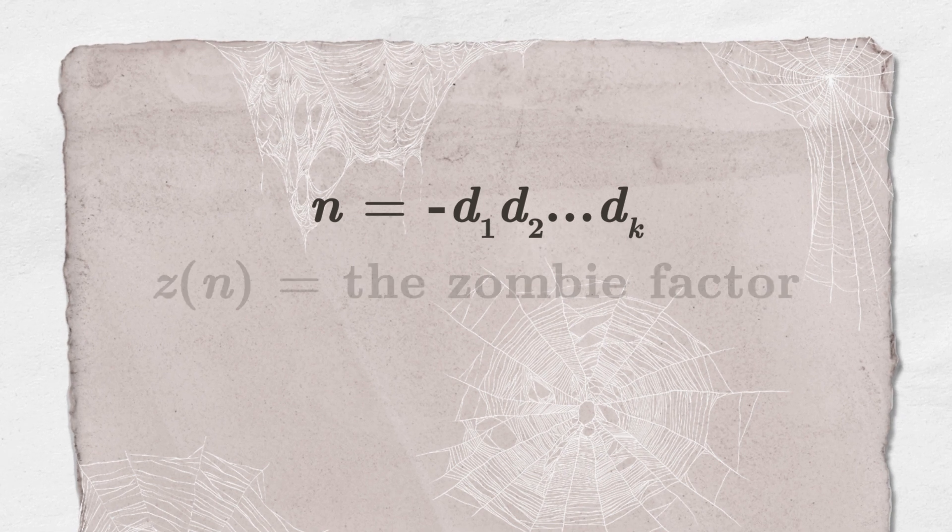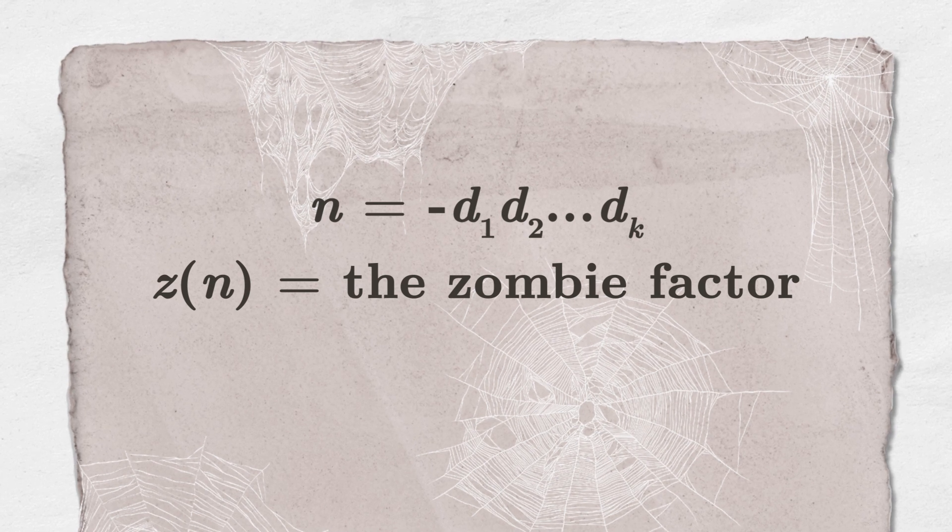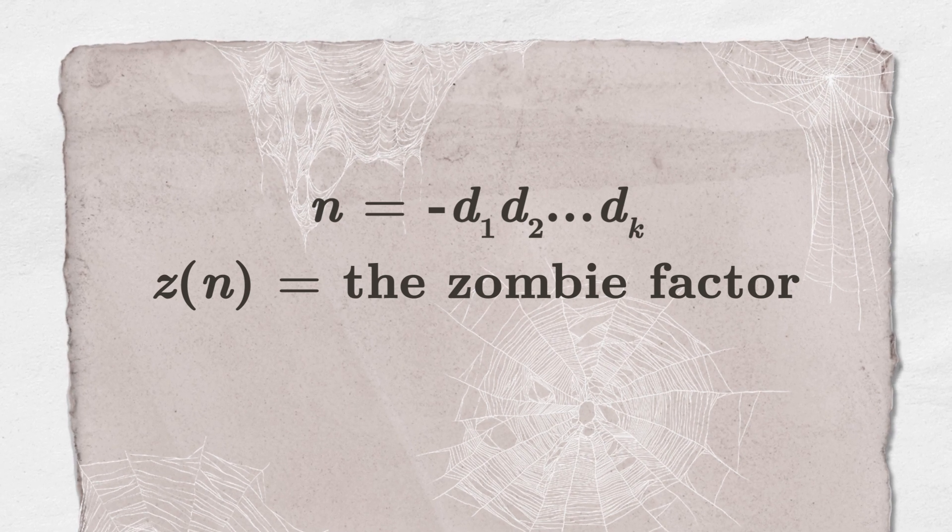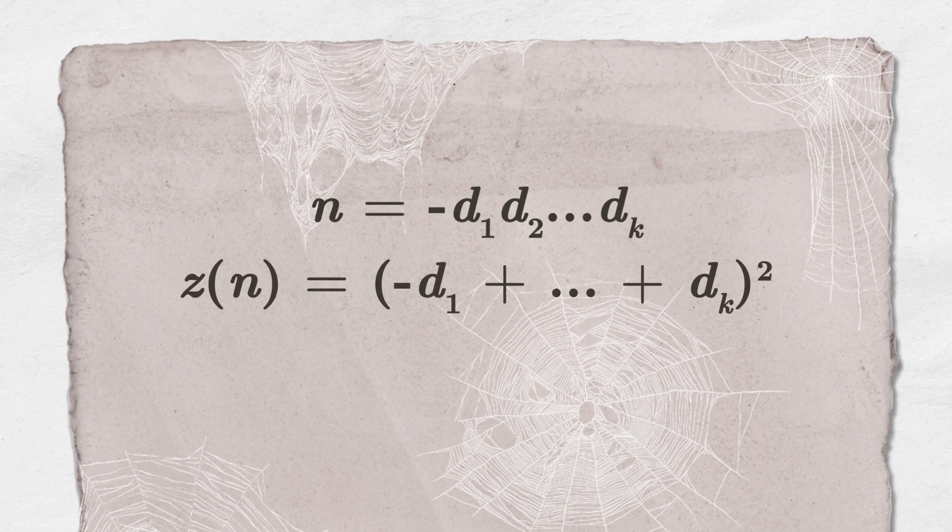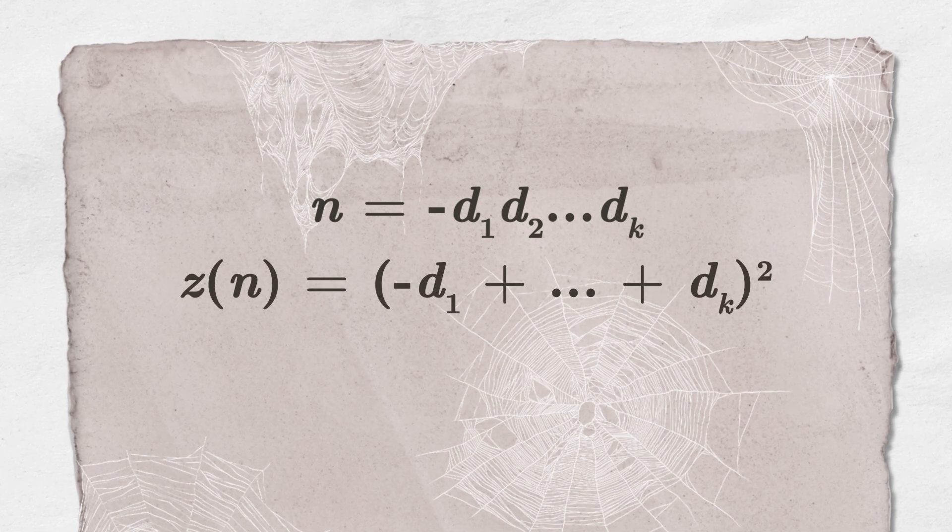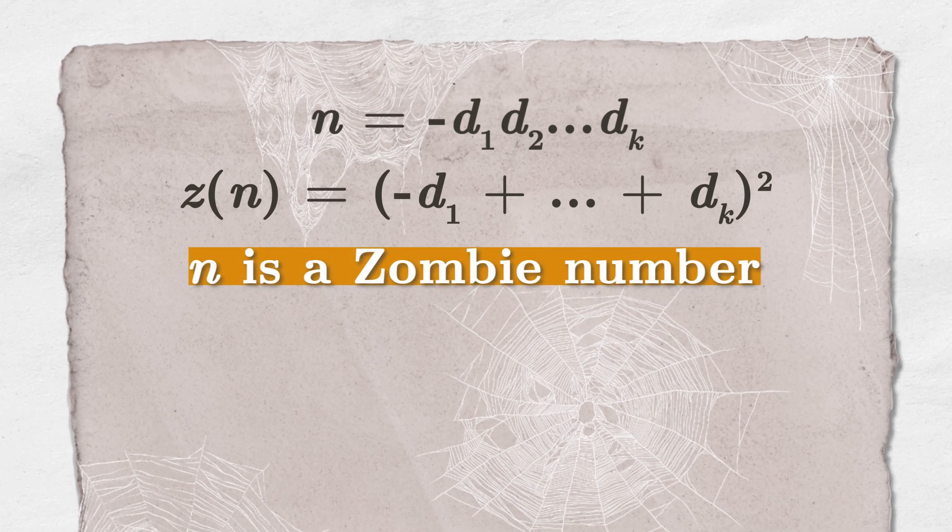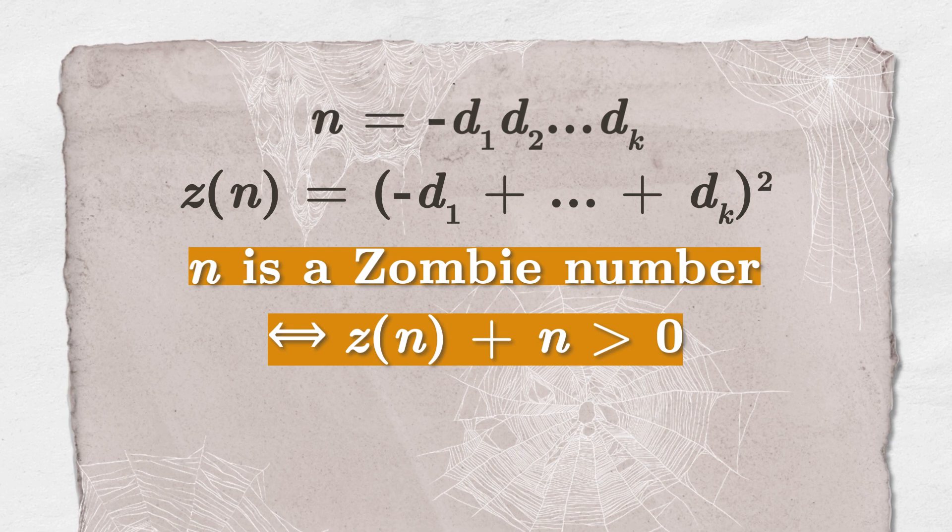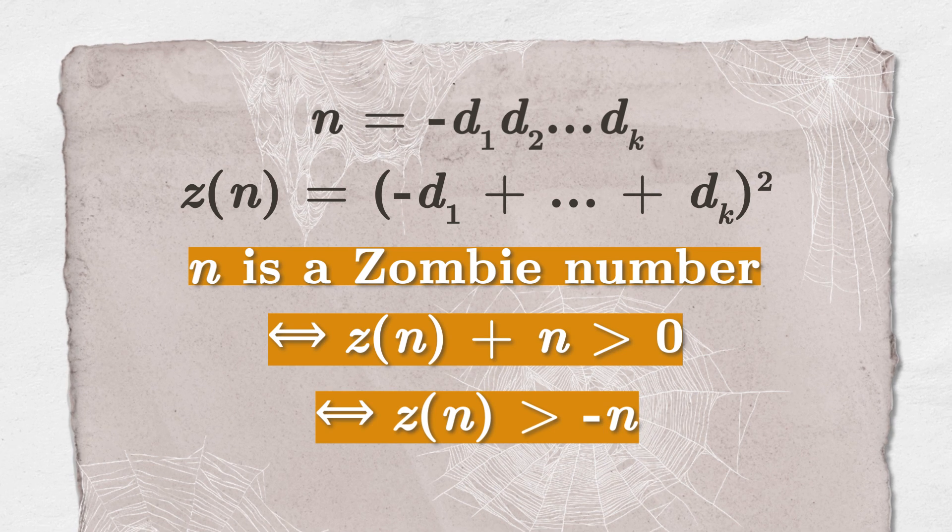Also, let z be the function that sums the digits of n, while assigning the minus sign to the first digit and then squares the result. We can define it like this. Therefore, we can say that n is a zombie number if and only if z of n plus n is a positive number, or equivalently, if the following inequality is satisfied.